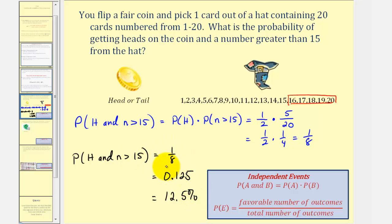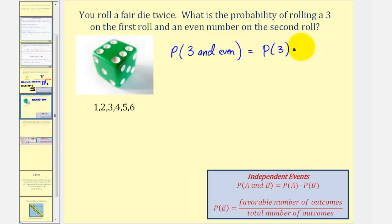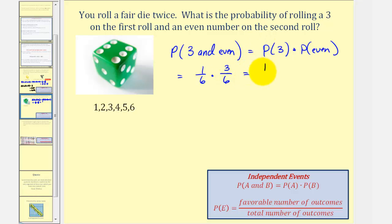Next, you roll a fair die twice. What is the probability of rolling a three on the first roll and an even number on the second roll? Because these two events are independent, this equals the probability of rolling a three times the probability of rolling an even number. The probability of rolling a three is one-sixth. Two, four, and six are even, giving three favorable outcomes out of six, which simplifies to one-half.